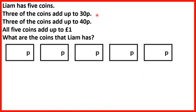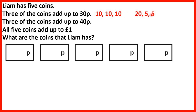Liam has 5 coins. 3 of the coins add up to 30p. 3 of the coins add up to 40p. All 5 coins add up to 1 pound. What are the coins? How can 3 coins add up to 30p? We could have 3 ten-pences, or 1 twenty-pence and 2 five-pences. What 3 coins add up to 40p? It must be a 20p and 2 ten-pences. So we already know at least one coin must be 20p and 2 must be 10p.